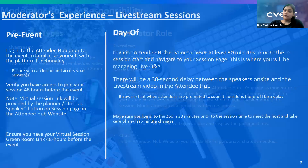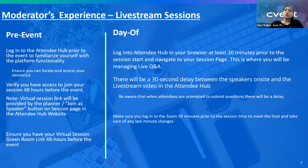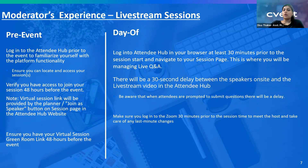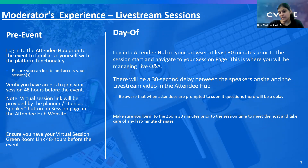What we expect from you as a moderator before the event is that you log into the Attendee Hub. You'd be getting a session link, a green room link, and a link to log into the Attendee Hub. All this information would be provided to you 48 hours before your event. Make sure that you have a session link to join your session and a green room link.